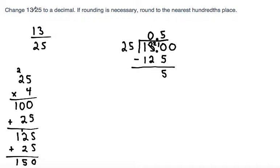From here, we can add another 0 and bring it down. So now we're trying to find out how many times does 25 go into 50. Well, 25 times 2, if we multiply that out, 2 times 5 is 10, 2 times 2 is 4 plus 1 is 5. So 25 times 2 is 50.